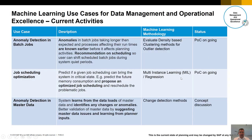Moving on to machine learning use cases for data management and operational excellence. Some of the things we're doing there include anomaly detection in batch jobs — recommendations for when we should be scheduling those batch jobs. There's also batch job optimization, and anomaly detection for master data: what's going on with the master data, has it gone wrong, should we be loading it in a different way? Those types of things.